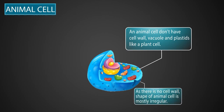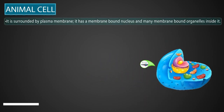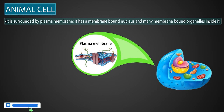As there is no cell wall, the shape of an animal cell is mostly irregular. An animal cell is surrounded by a plasma membrane. It has a membrane-bound nucleus, and many membrane-bound organelles inside it.